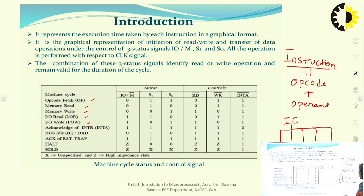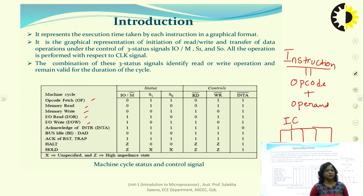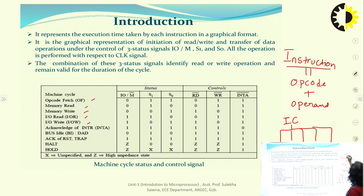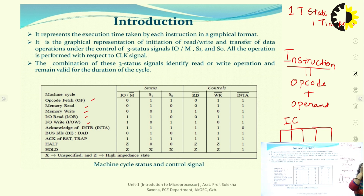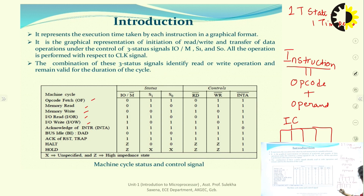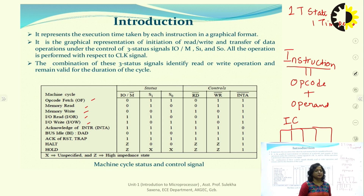A machine cycle is the time required to complete one operation of accessing memory or IO. The smallest unit of time is called 1 T state, which is equal to one time period. The time required to complete any operation is specified in terms of T states — minimum one machine cycle consists of 3 and maximum 6 T states.